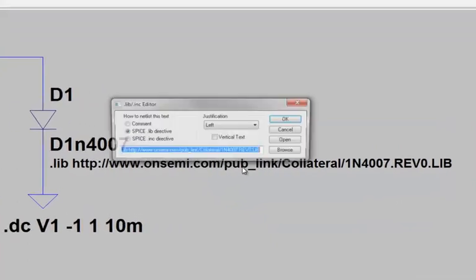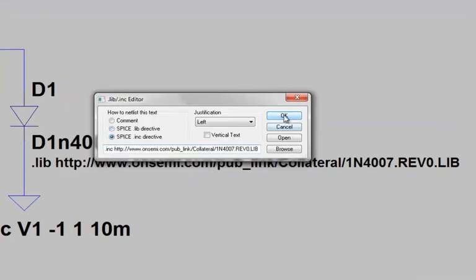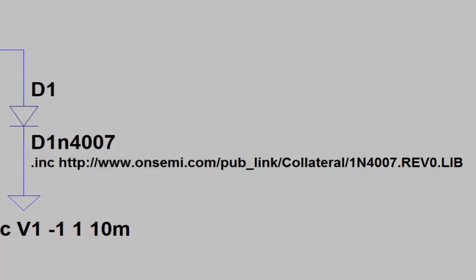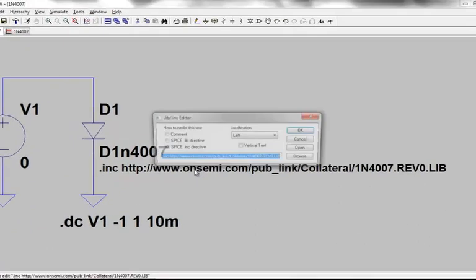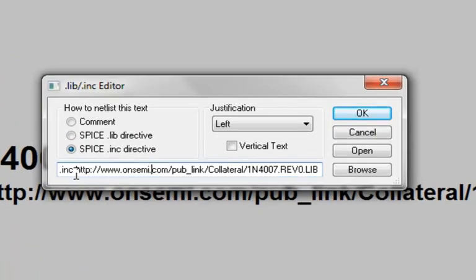Alternately, we could have also done this with a dot include statement. The difference between the dot include statement versus the dot lib statement is the dot lib statement will only copy over the dot model statements that are appropriate for our simulation. The dot include will copy over the complete library to our local directory. Once we have a local copy of the library file in our development environment, we can then edit this dot include or dot lib statement so that we no longer download that library file every time we execute the simulation.